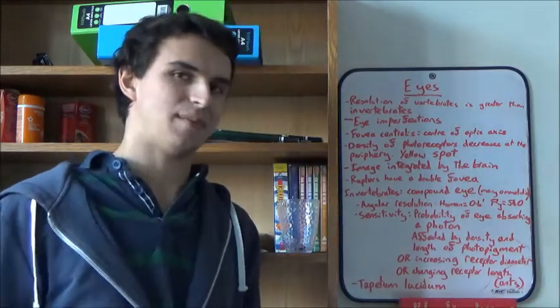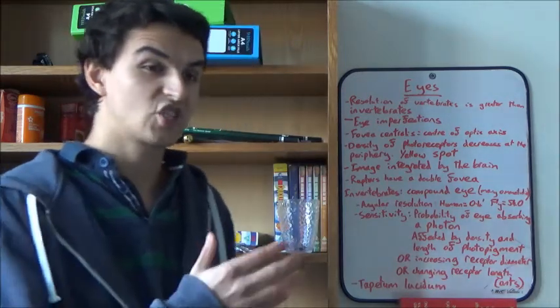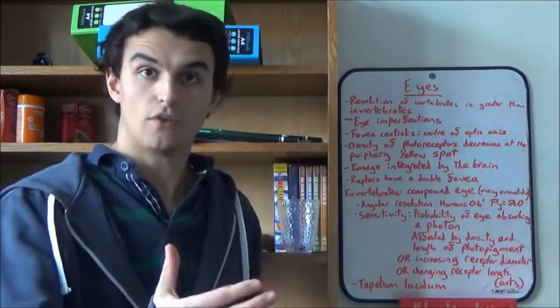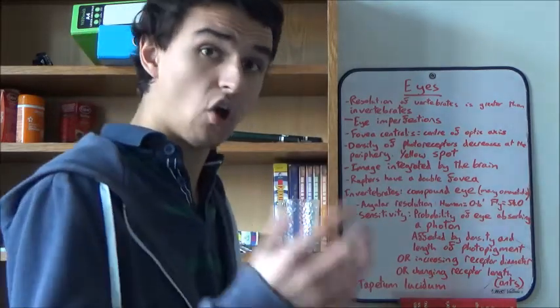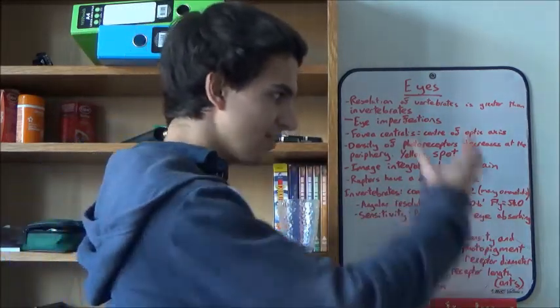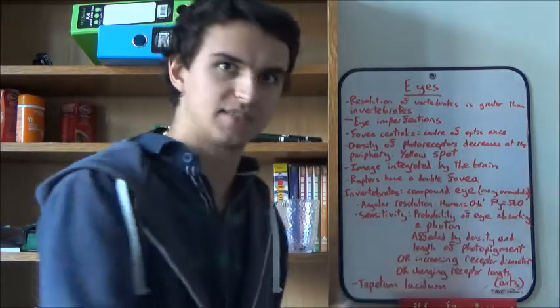And you see that in loads of nocturnal animals. They tend to have a greater diameter, a greater receptor diameter. You can also actively change the length of your photoreceptor. This was shown by Menzi et al. in 1986 on ants, where at night the length of the photoreceptor increased.